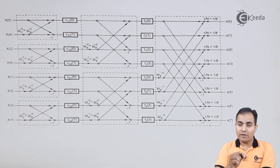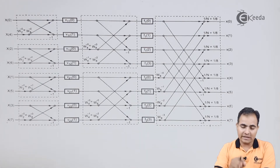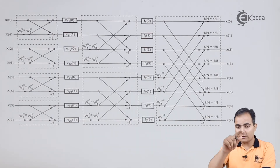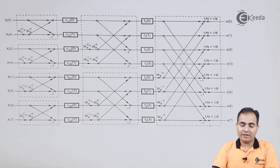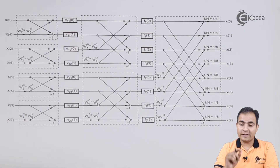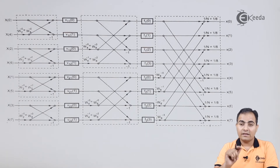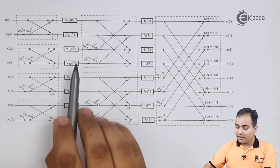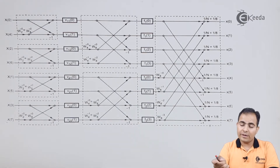In DIT-FFT, we count our twiddle factor in the anticlockwise direction because the theta value e to the power minus j2πk/N has a negative sign. If we have a minus theta, we count angles in the negative direction. But in IFFT, the e to the power functions have a positive sign, meaning we calculate our angle in the positive manner. The twiddle factor omega N to the n is always represented by e to the power minus j2πk/N. Here, if the small n value has a negative sign, then in exponential form it has a positive sign, and due to that positive sign we count our angle in the clockwise direction.